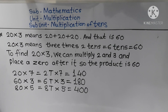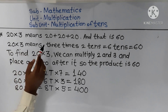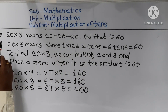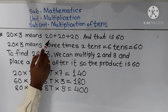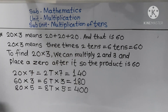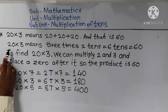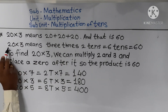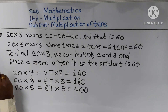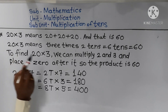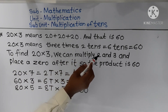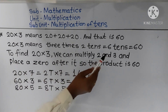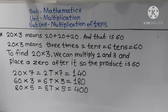Let's check out another example. 20 multiplied by 3 means 20 plus 20 plus 20, and that is 60. 20 means 2 tens, so 2 tens multiplied by 3 gives 6 tens. So the answer is 60.